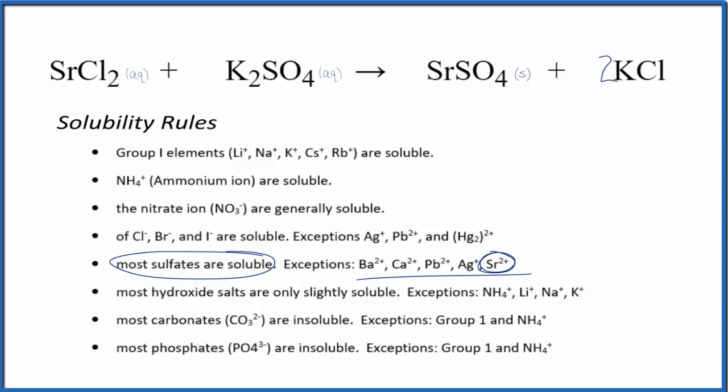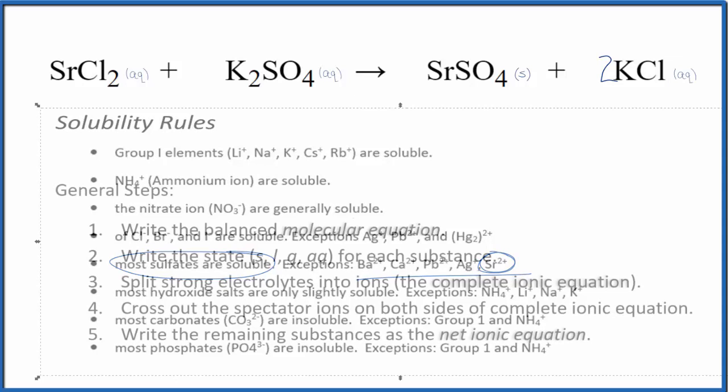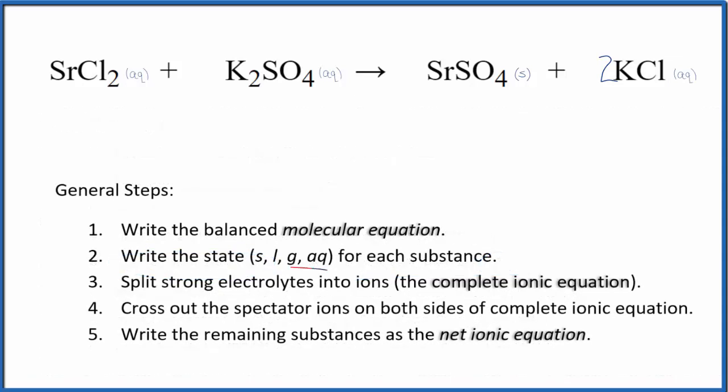And then potassium and chloride compounds very soluble. Put an AQ after those. Now that we have the states, we can split the strong electrolytes into their ions for the complete ionic equation.